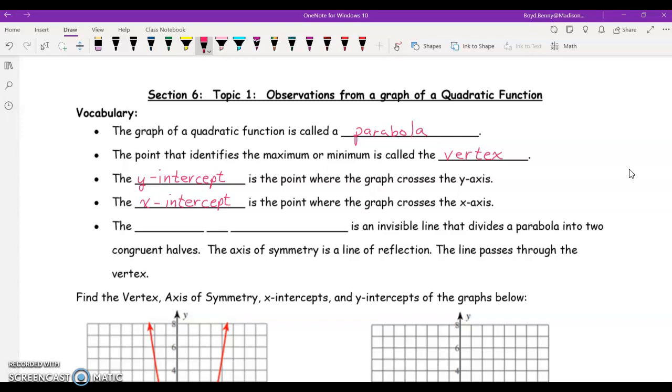And it should be noted that the y-intercept would be 0 comma some y-value, and the x-intercept would be some x-value comma 0.